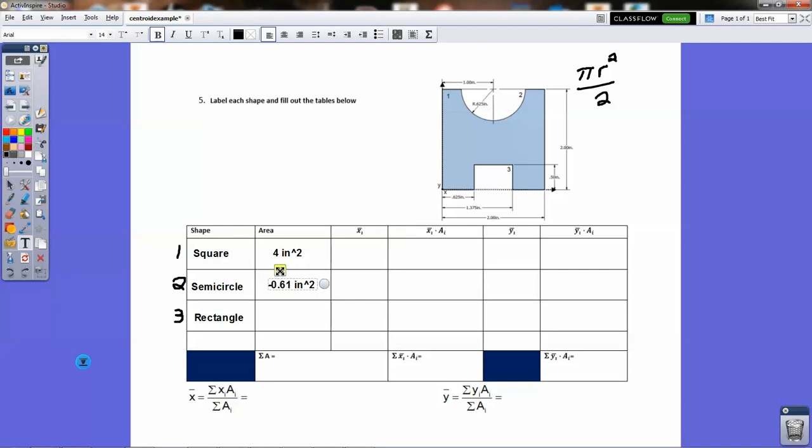So we're going to consider that, and then the rectangle. Now this rectangle here, this dimension here is 0.625, and the dimension from here to here is 1.375. So if I subtract the two of those, I get 0.75 as the dimension of the side of this rectangle, and the height is known over here. That's 0.5. So the area of this rectangle is 0.375, but we're going to make it negative because, again, it's a cutout. So we have those three items all set.